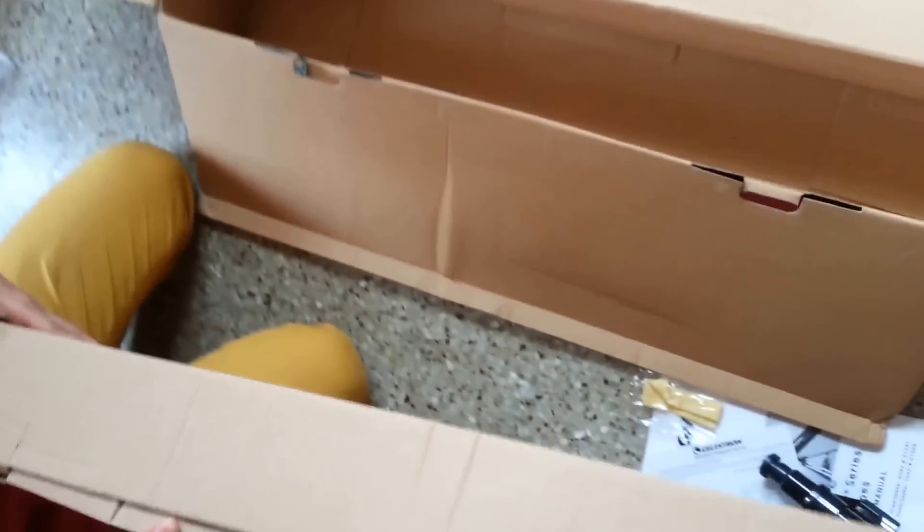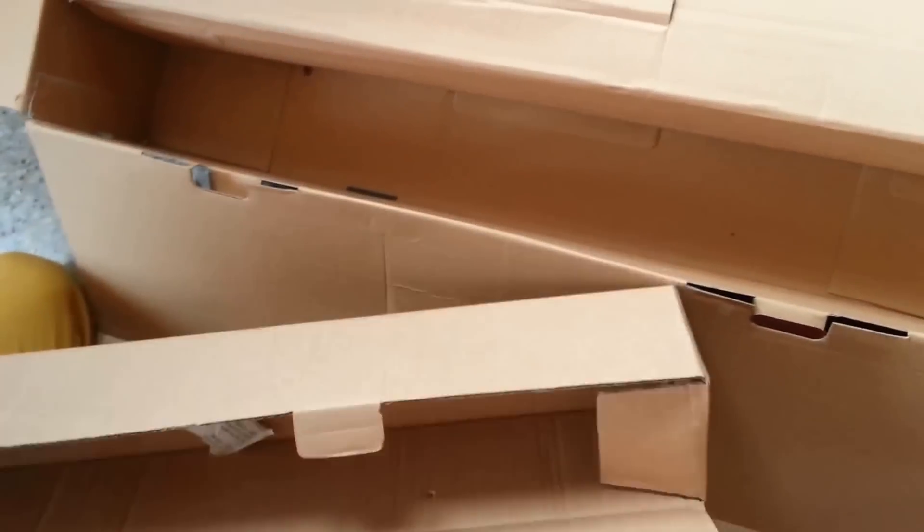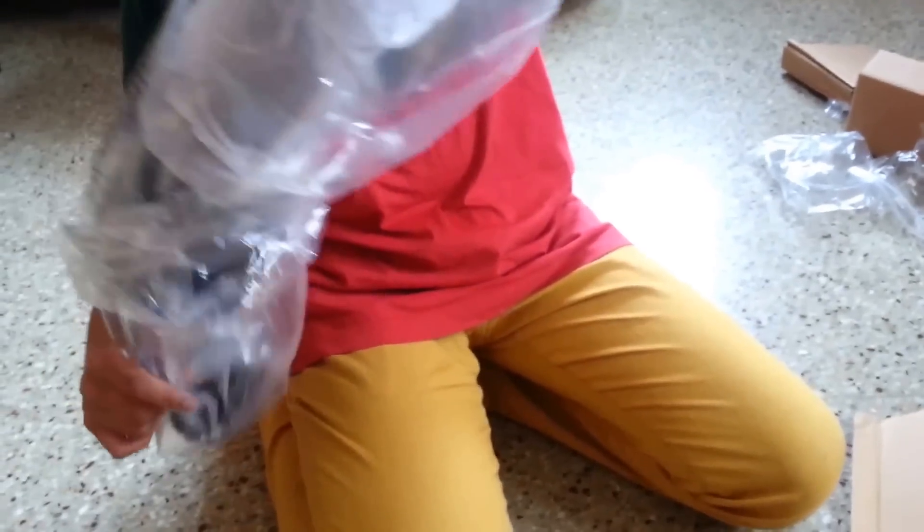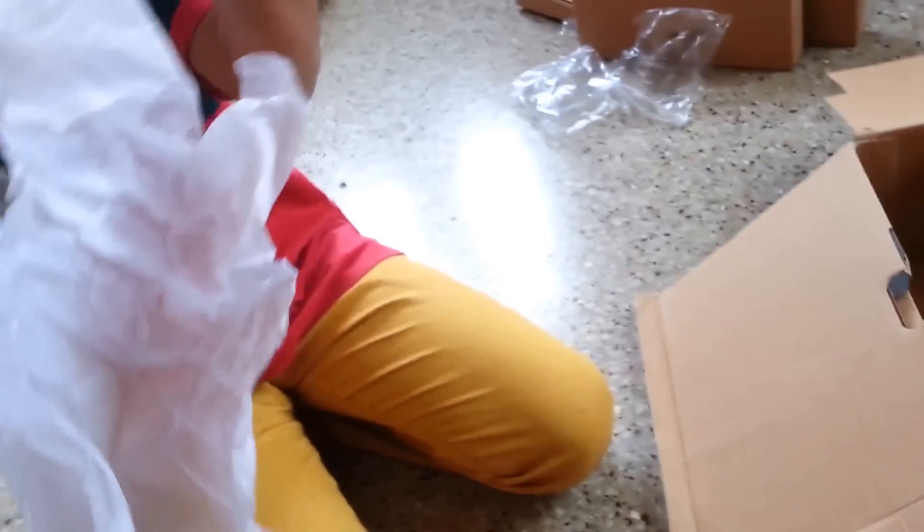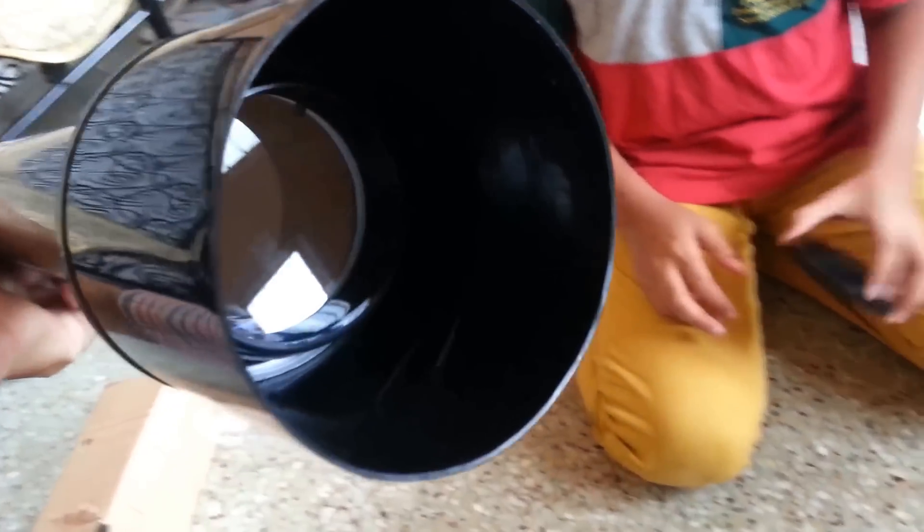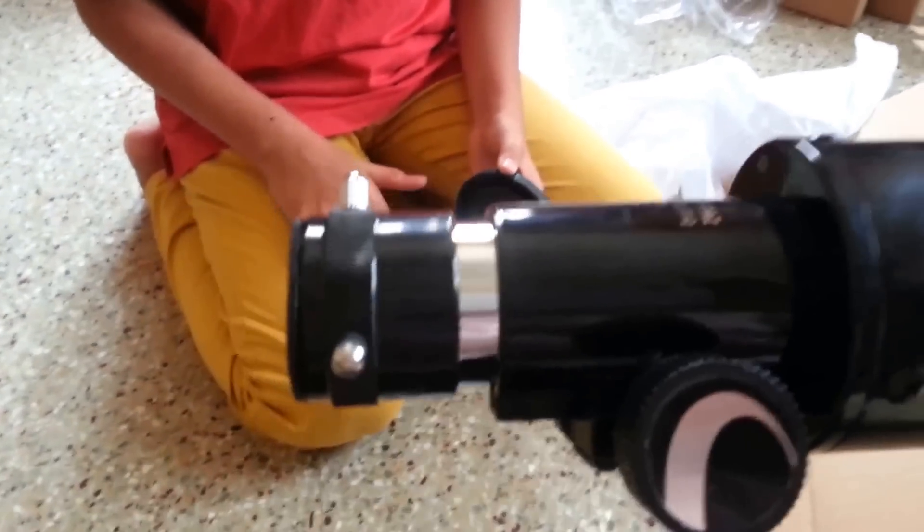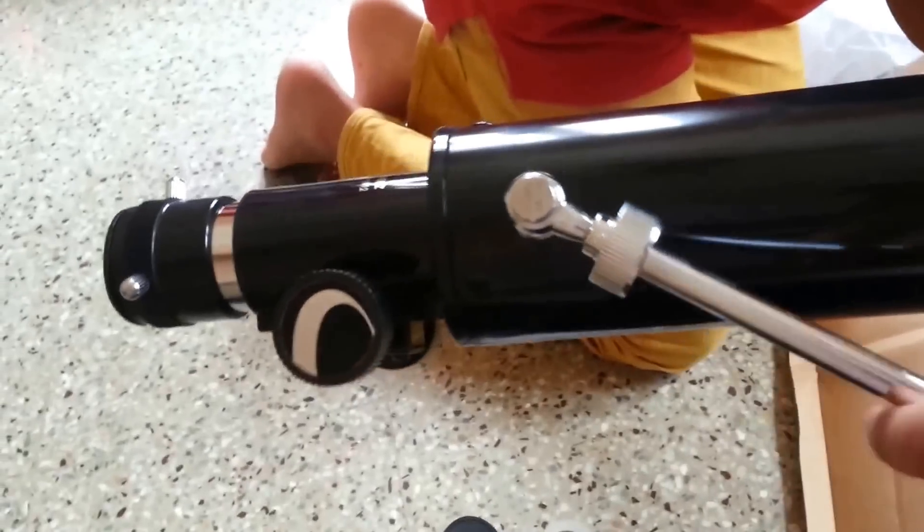So we will slowly open this box. Now you can see the main telescope body here which is neatly packed. Slowly guys. Can you just take out the thing slowly and keep it on the platform here? So this is the main telescope tube. Now this is the 60 millimeter objective. So this is the Celestron Power Seeker 60AZ. And you have the eyepiece end here.